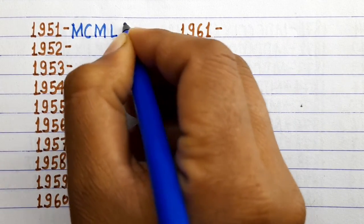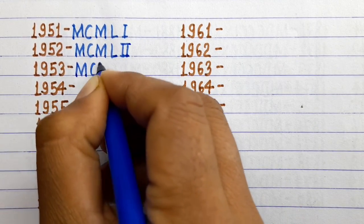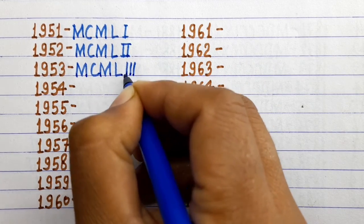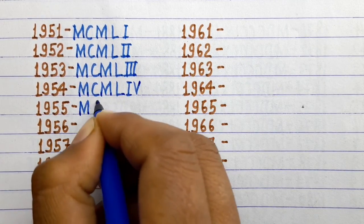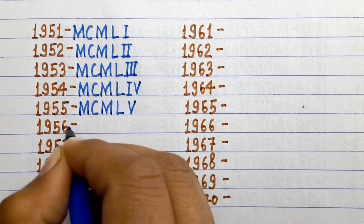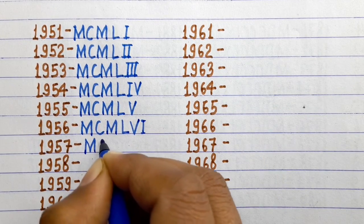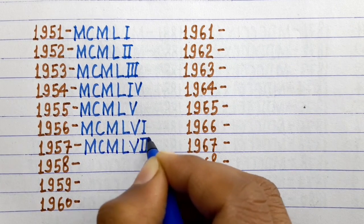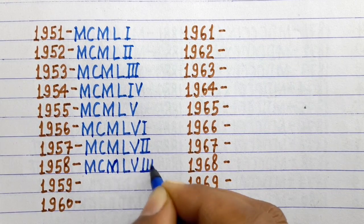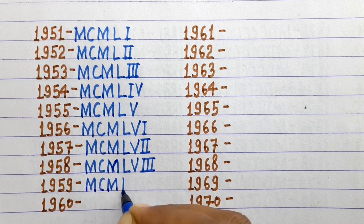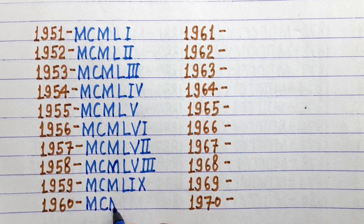1951 MCMLI, 1952 MCMLII, 1953 MCMLIII, 1954 MCMLIV, 1955 MCMLV, 1957 MCMLVII, 1958 MCMLVIII, 1959 MCMLIX, 1960 MCMLX.